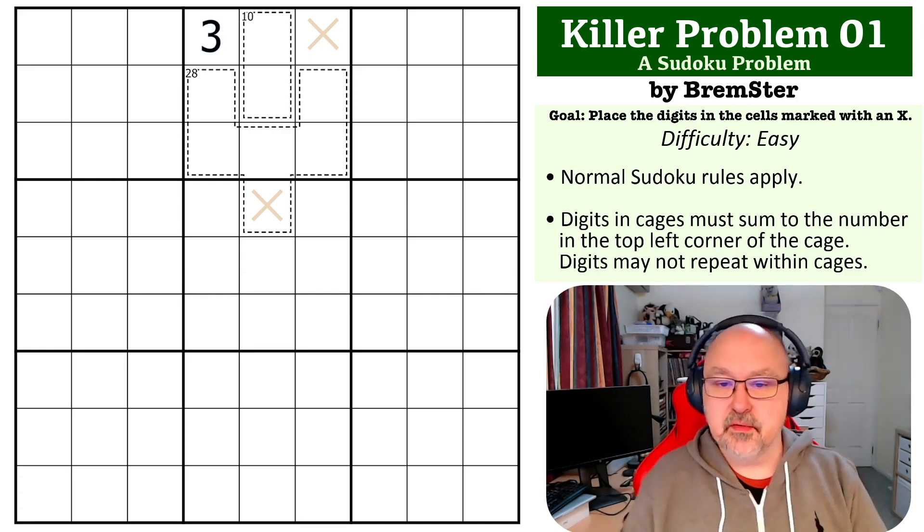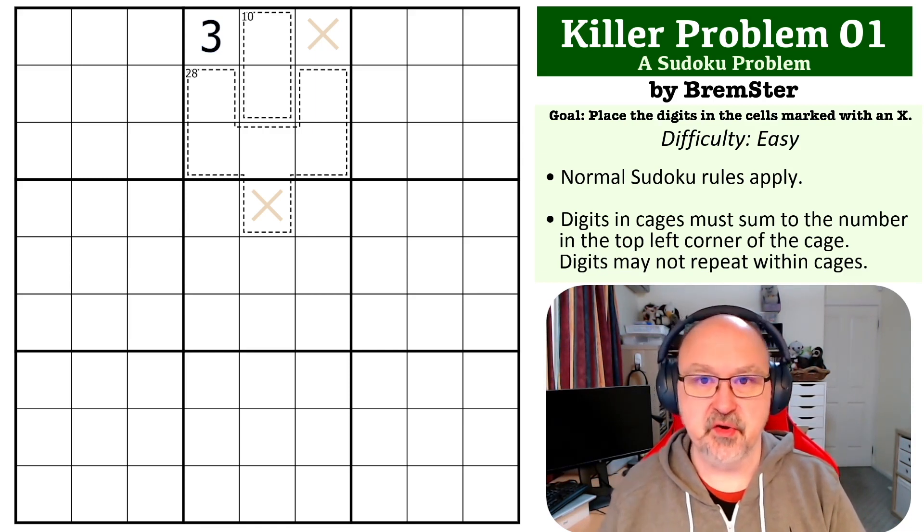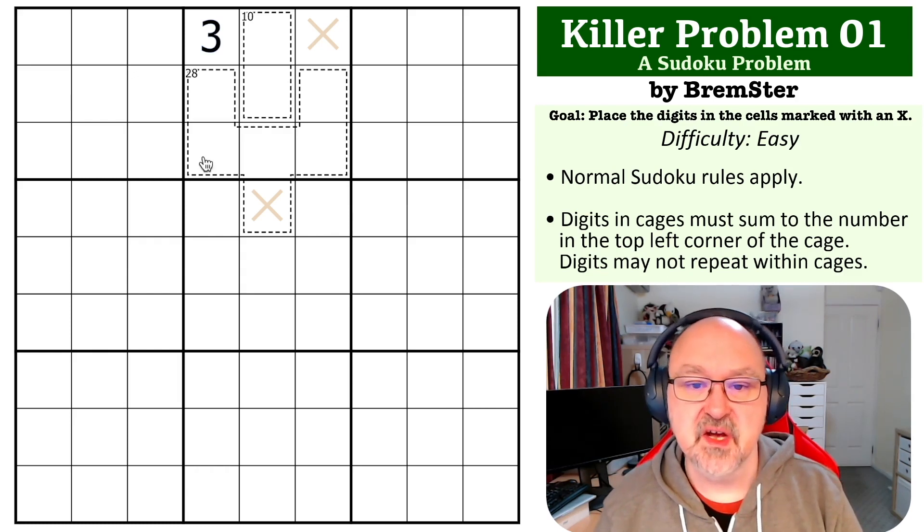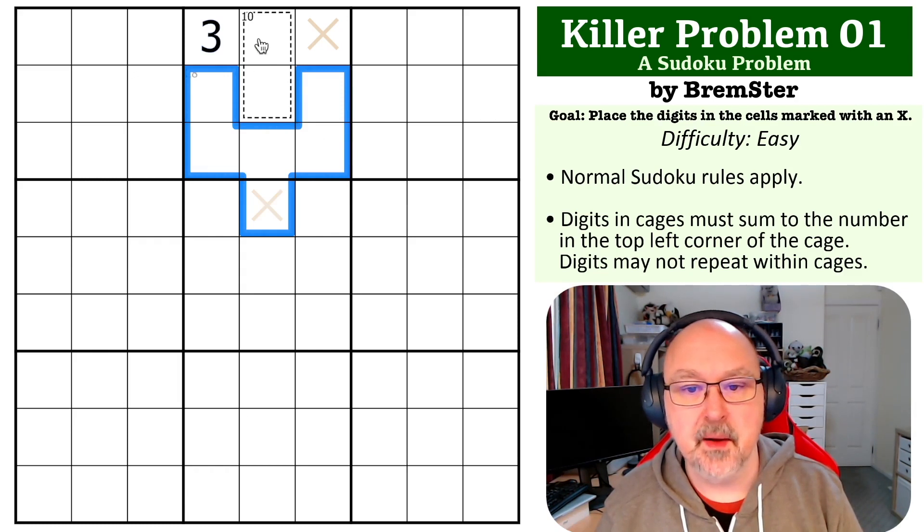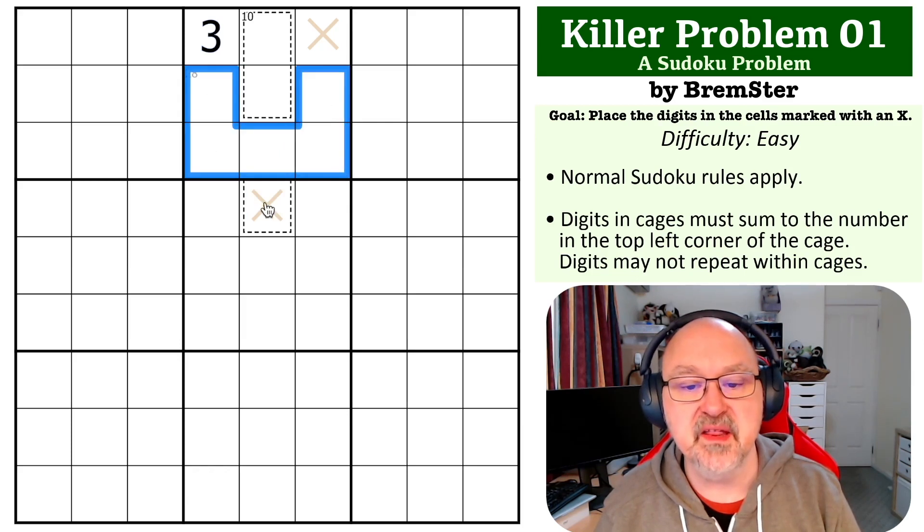Okay, so there are a couple of different ways that people will often think about a problem like this when they see it in killer Sudoku. I'm going to show you the way that I normally think about this. So the way I normally think about this is these are two cages, and both of the cells in this cage see all of the cells in this cage. So you can combine these cages.